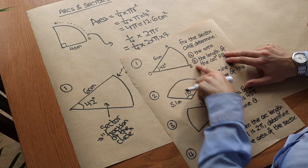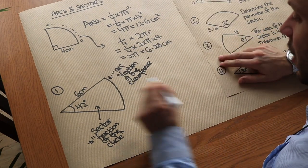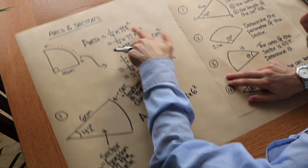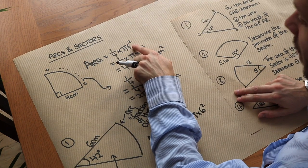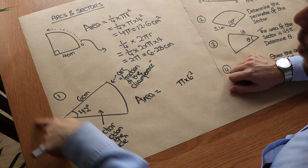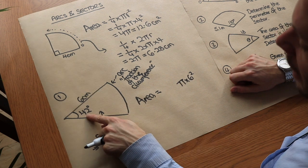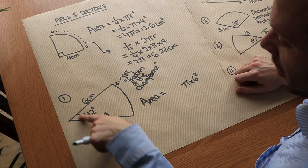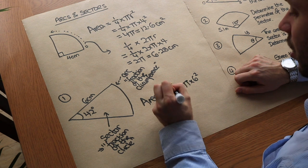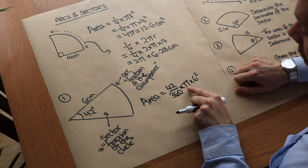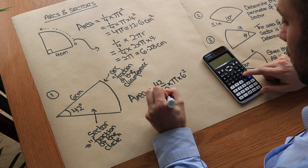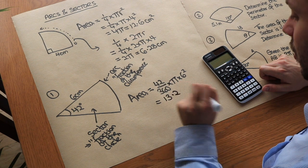For sector OAB with radius 6 centimeters and angle 42 degrees, let's determine the area. We start with the area of a full circle: pi times 6 squared. Remember, the squared is only on the r, so it's pi times 6 squared. The full angle at the center is 360 degrees, but we only have 42 degrees, so the fraction is 42 over 360. Multiplying gives us 21 over 5 times pi, which as a decimal is 13.2 centimeters squared.